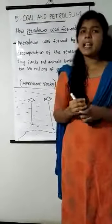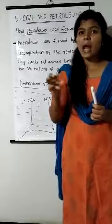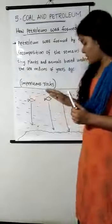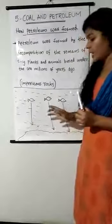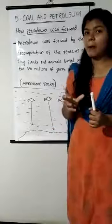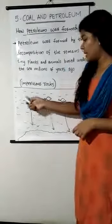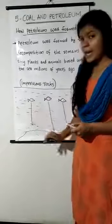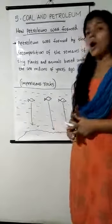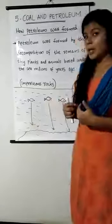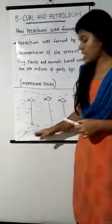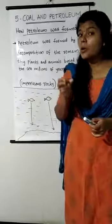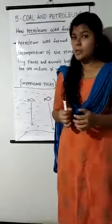Sea creatures like small plants, fishes, and small animals in the sea — when they died, they settled at the bottom of the sea and gradually got covered by sand, mud, clay, etc. Over millions of years, due to high temperature, pressure, and the absence of air, these dead remains of plants and animals slowly converted into petroleum.